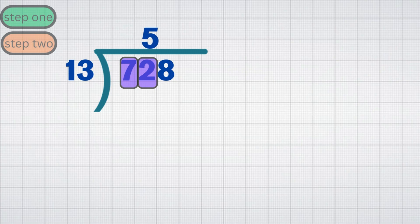Important! If you skip a digit and combine another, always place the quotient digit above the one you just combined.